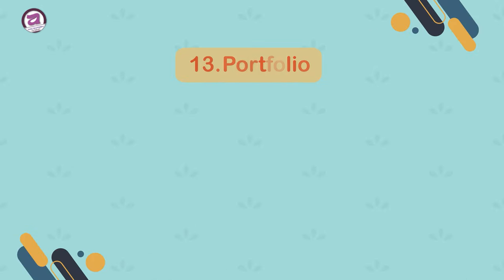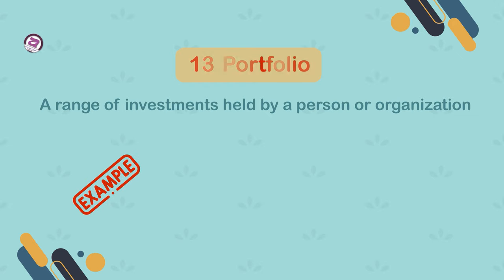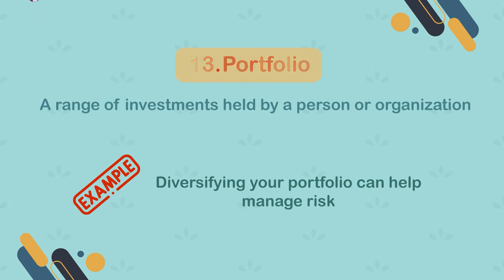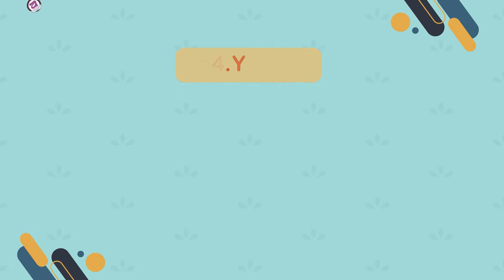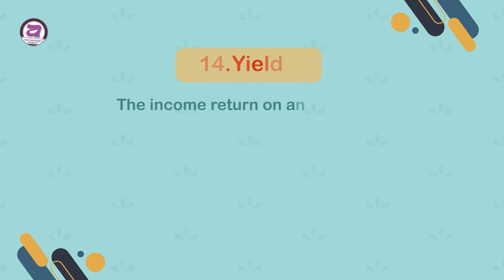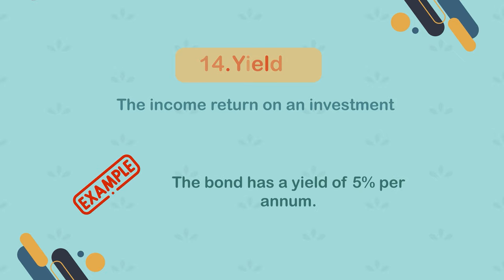13. Portfolio. A range of investments held by a person or organization. Example: diversifying your portfolio can help manage risk. 14. Yield. The income return on an investment. Example: the bond has a yield of 5% per annum.